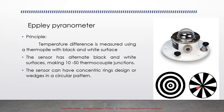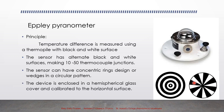Alternate black and white junctions are arranged from the center of the circle outward. The device is enclosed in a hemispherical glass cover and calibrated to measure radiation on a horizontal surface.